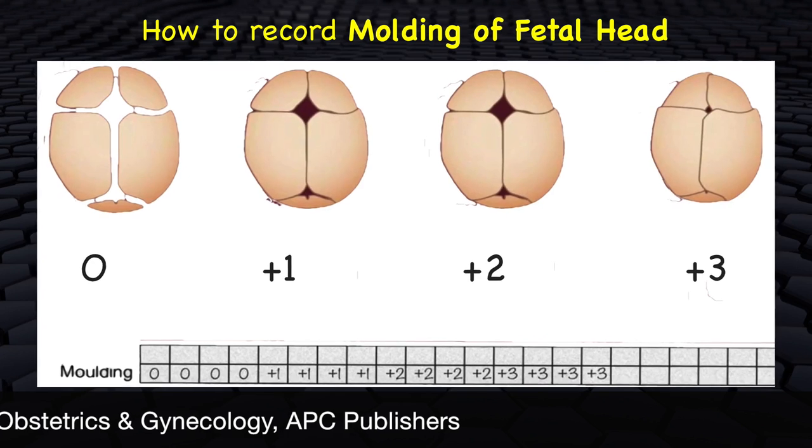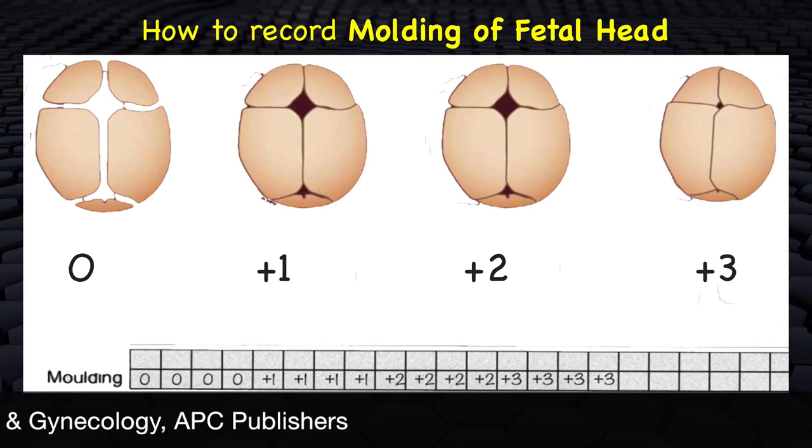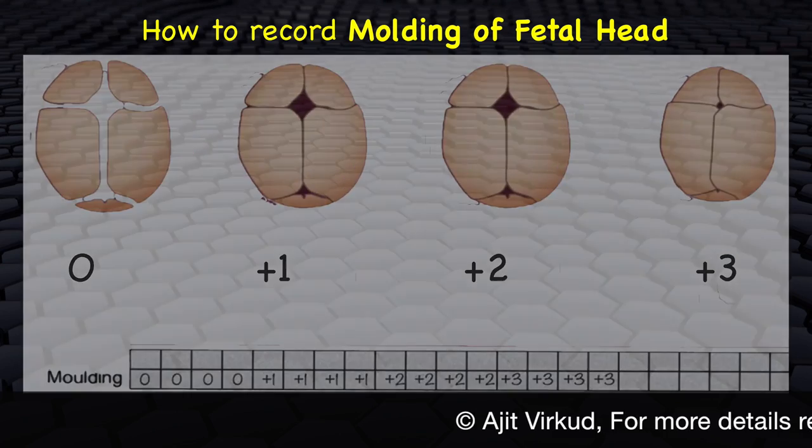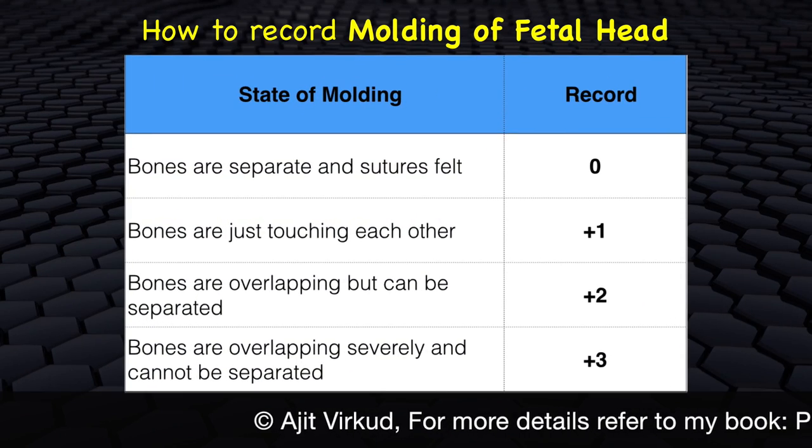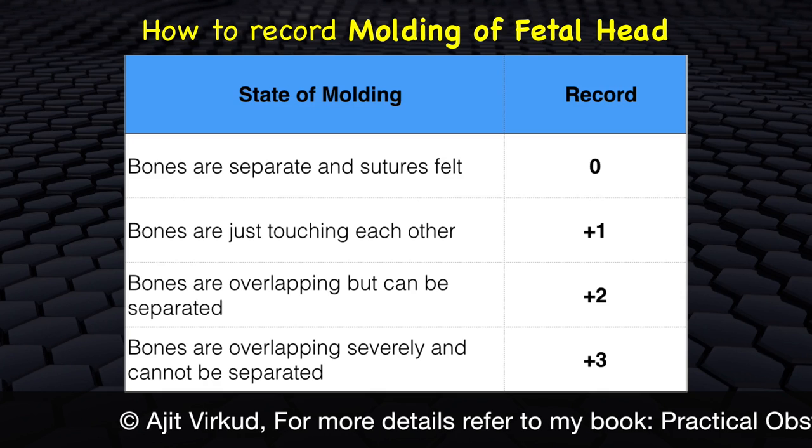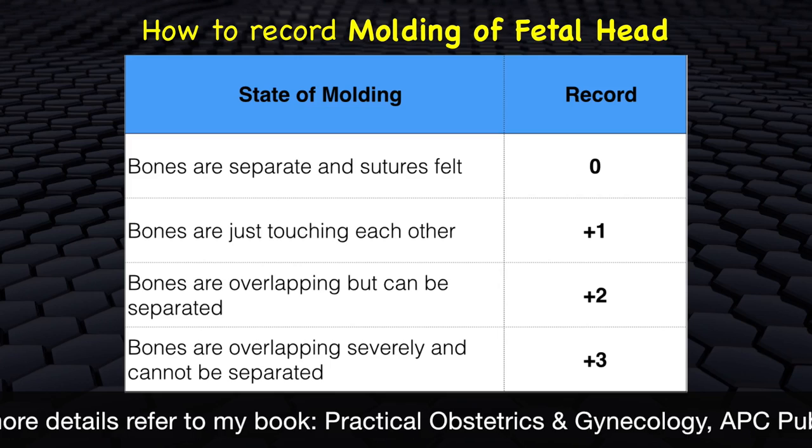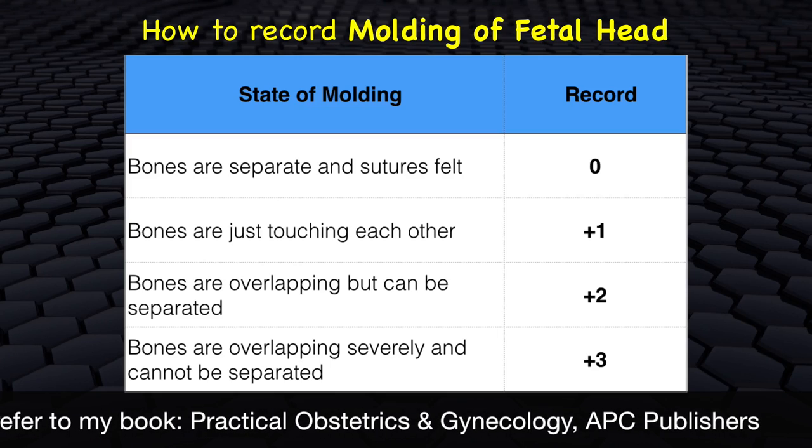Moulding of fetal head is also recorded. It is the extent to which the cranial wall bones overlap and indicates the degree to which the head is compressed as it passes through the bony pelvic cavity. Excessive molding is an indication of obstructive labor, possibly due to cephalopelvic disproportion. Moulding is recorded on a scale of 0 to plus 3, 0 indicating no molding and plus 3 indicating excessive molding.